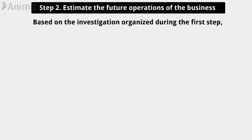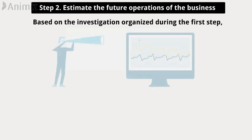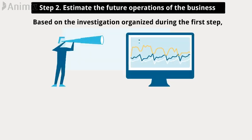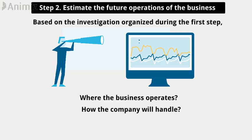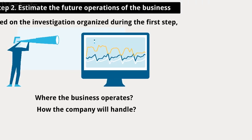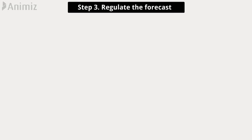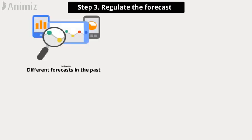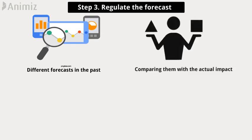Step two — estimate the future operations of the business. Based on the investigation carried out during the first step, the second part of forecasting involves estimating the future conditions of the industry where the business operates and projecting how the company will handle those conditions.